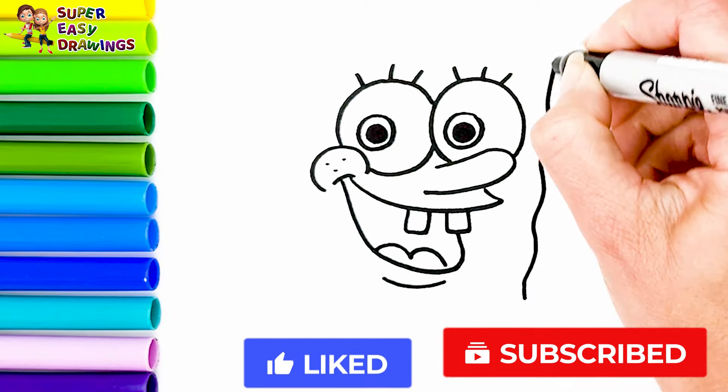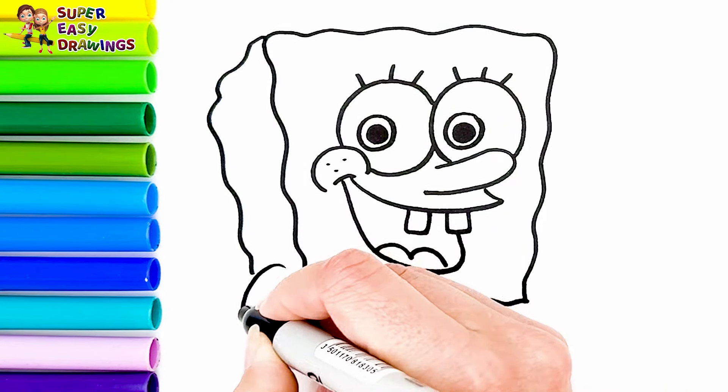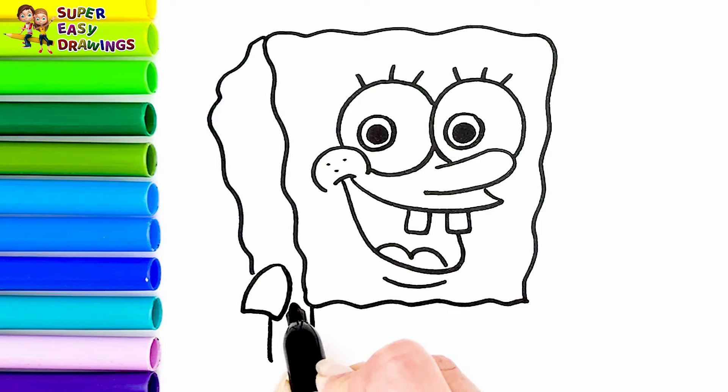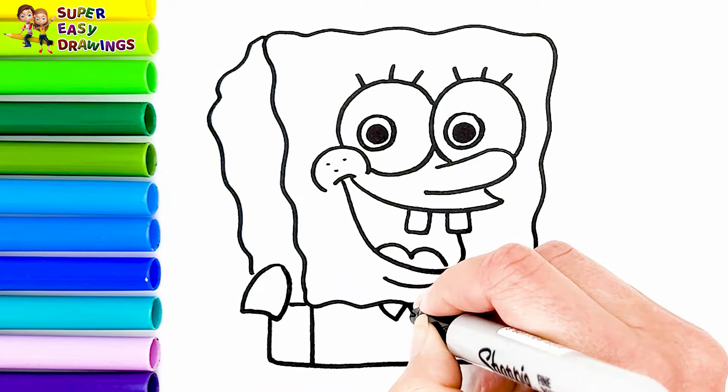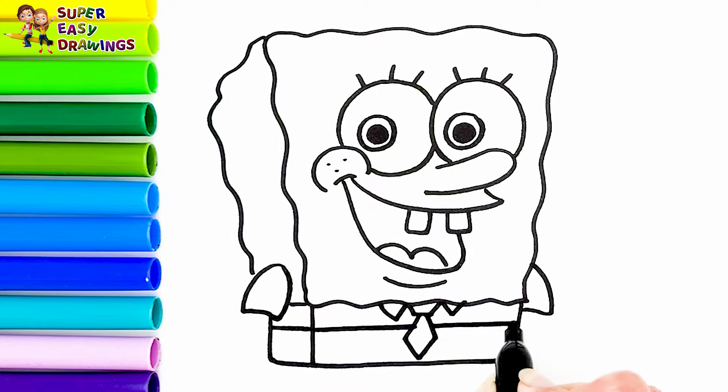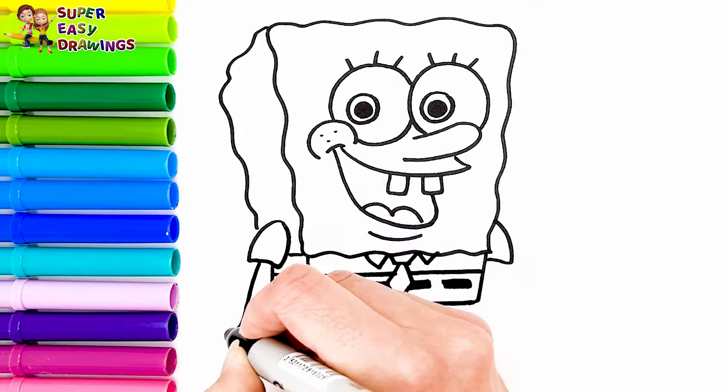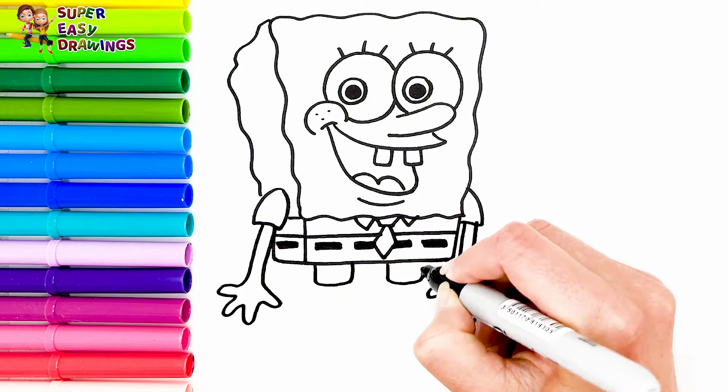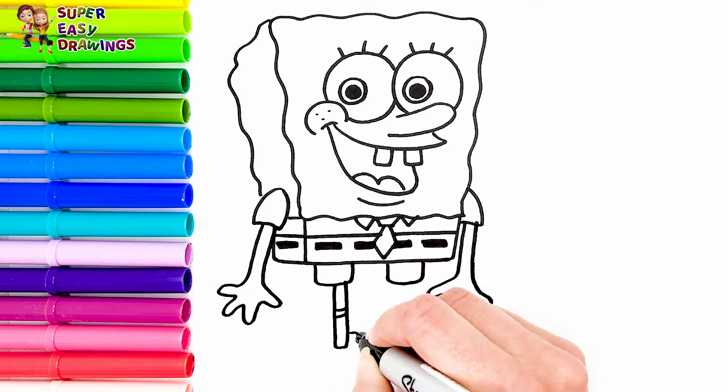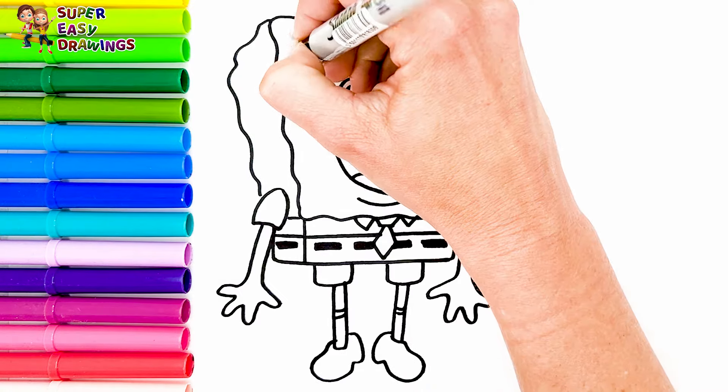Then I draw the shape of his head and continue with his body and his arms. He wears a tie and a shirt and I draw his pants like this. Finally I draw his legs. Amazing!